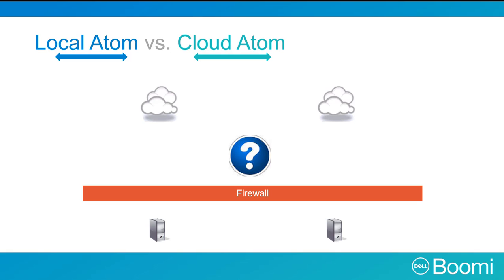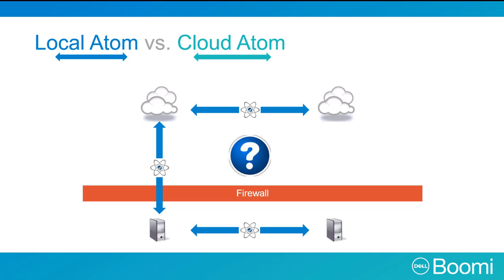You may be confused deciding whether to install and use a local Atom or a cloud Atom, but it's really quite simple. For demonstration purposes, we'll use the blue arrow to represent a local Atom, and the green arrow to represent a cloud Atom. A local Atom can get access to all resources, whether they are on-premise to on-premise, on-premise to cloud, or cloud to on-premise, and cloud to cloud. You can use a cloud Atom to get access to resources solely in the cloud and never need to directly connect to your resources residing behind the firewall.